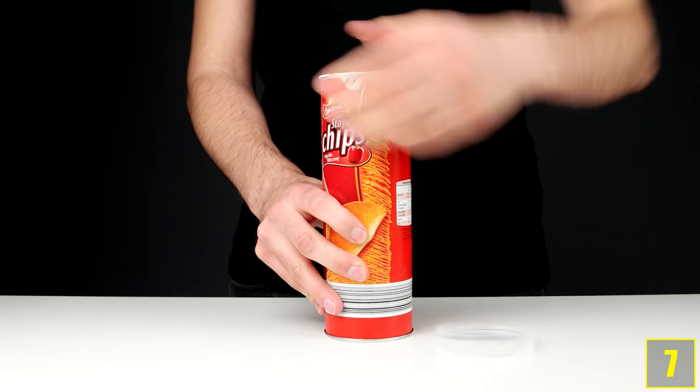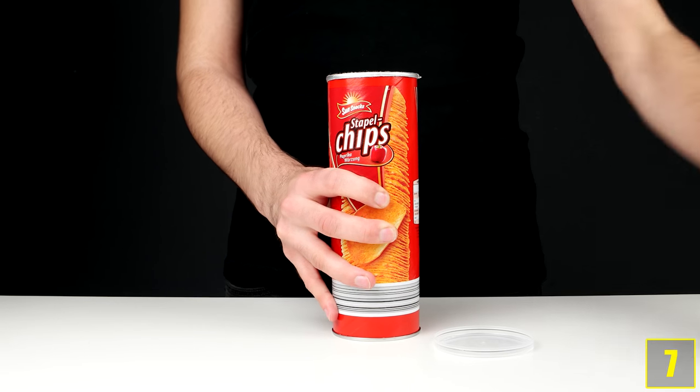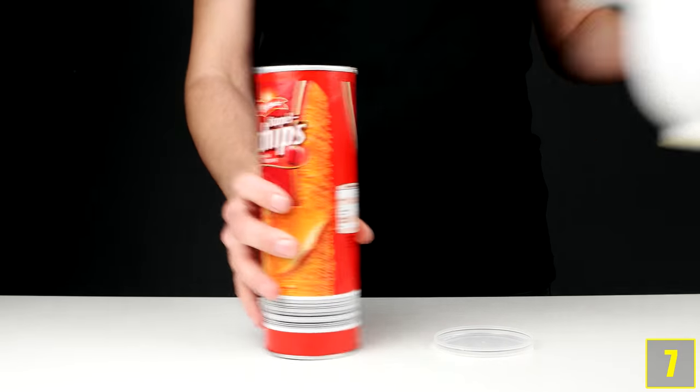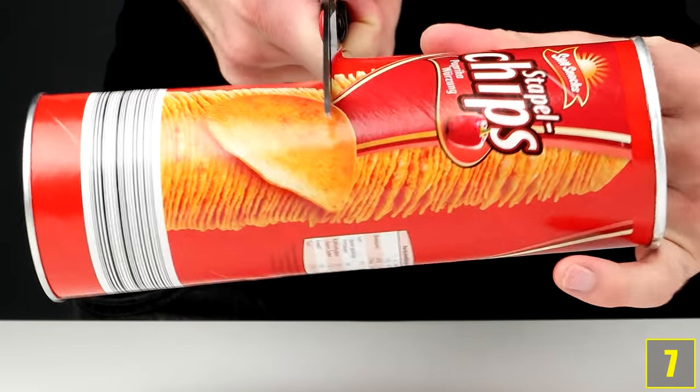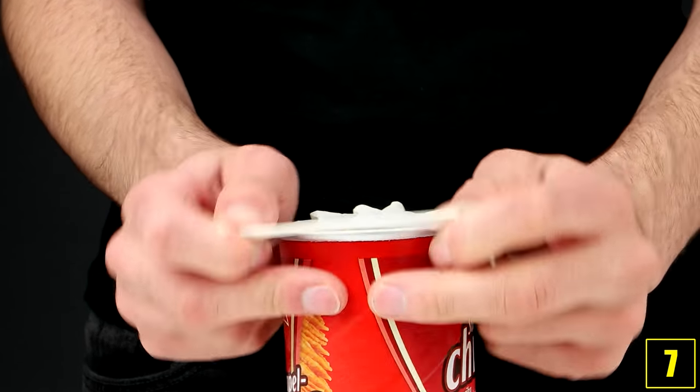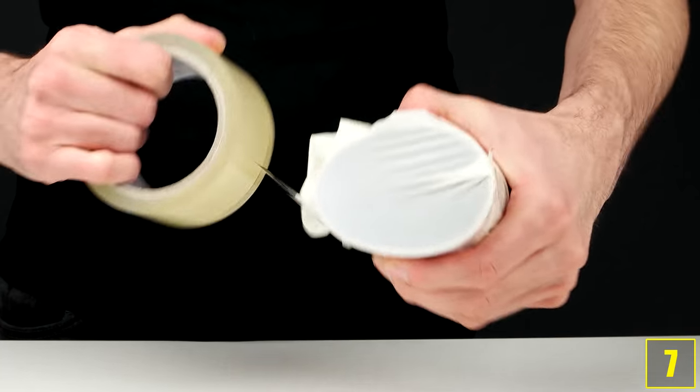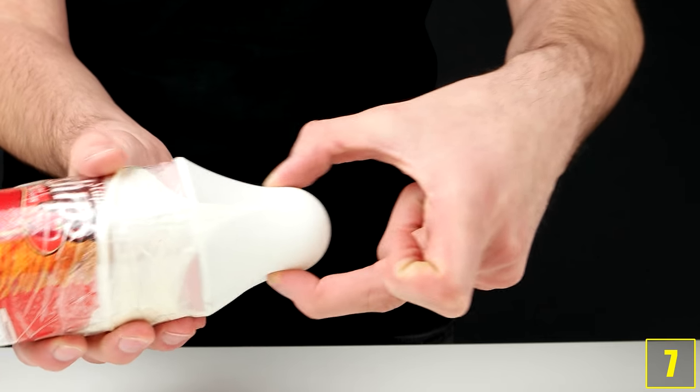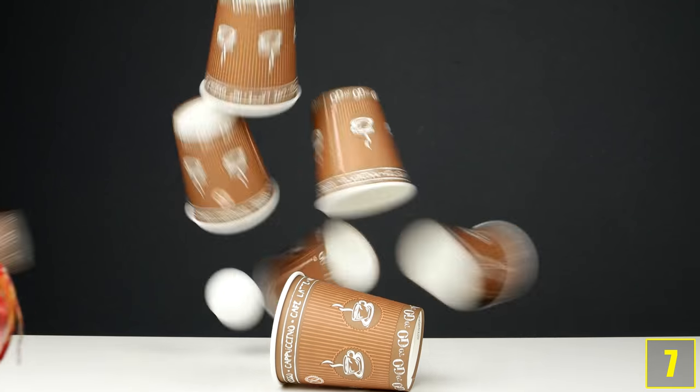And number 7. Now we'll build a table tennis ball slingshot. Take out all of the chips of a chips can, make a hole in the middle and cut it into two pieces. Strain a rubber glove over the end of the tube and fixate it with cellotape. Once you've strained a table tennis ball with a glove like this, the target shooting can commence. And fire!